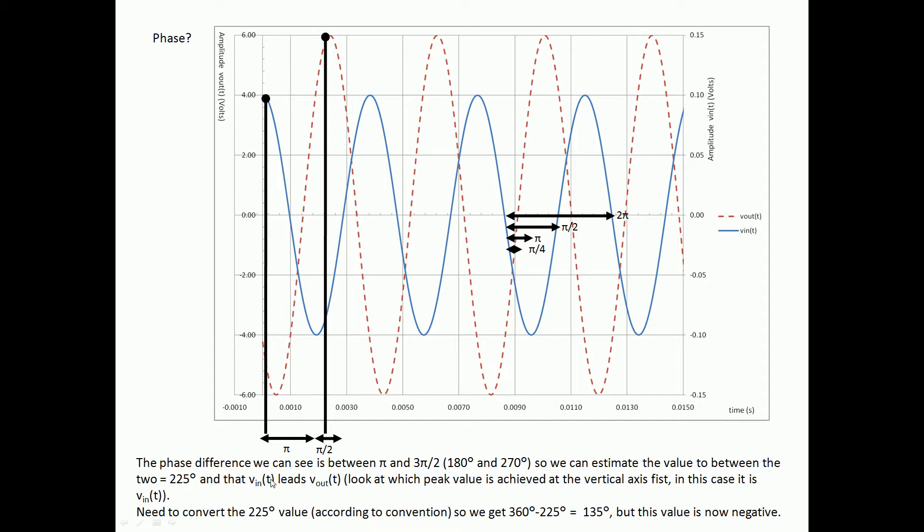Now we've got that value, we want to know which one is leading and which one is lagging. Well, if we look closest to the vertical axis, we're going to see which waveform hits the maximum first. We can see that the one that hits the maximum first is actually V_in(t). That's maximum first, and then after our phase shift we're seeing that V_out(t) is then reaching its maximum.